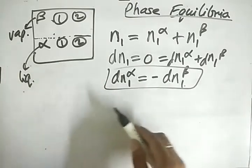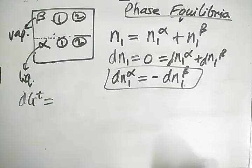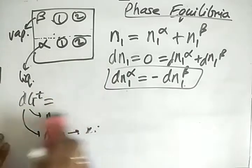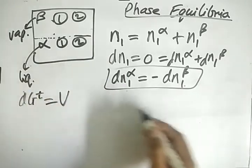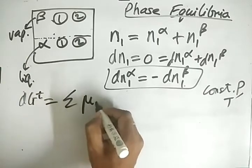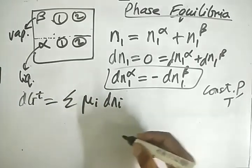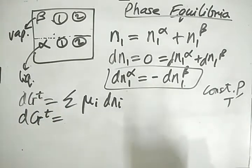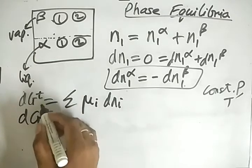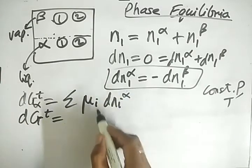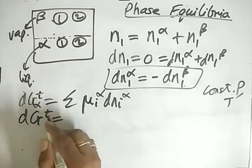Now let's apply the dGt equation. At constant pressure and temperature, dGt reduces to the summation of mu-i times dni. For a two-phase system we need this for both phases, so for the alpha phase we have the summation of mu-i-alpha times dni-alpha.